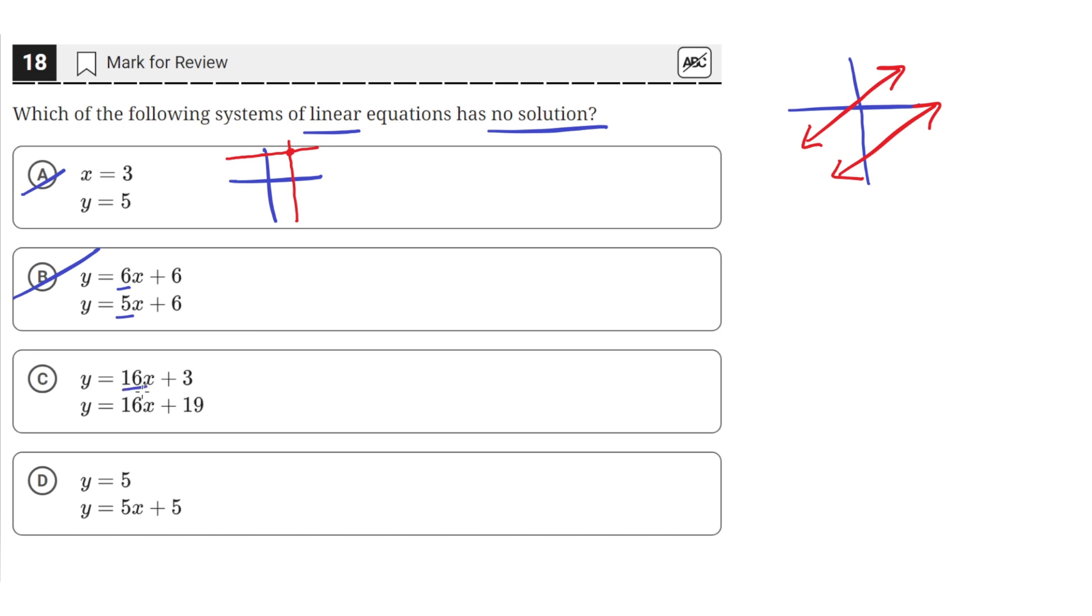Answer choice C has the same slope and different y-intercepts. So that means that these two are parallel lines that do not overlap, but they do not intersect. So C is possibly the correct answer, but let's check D first.